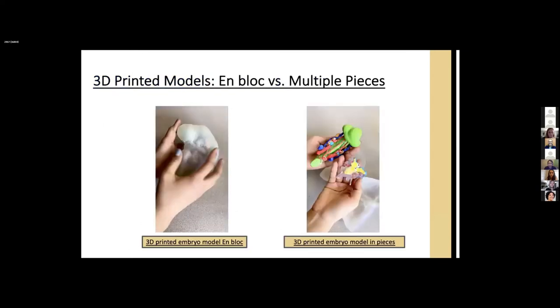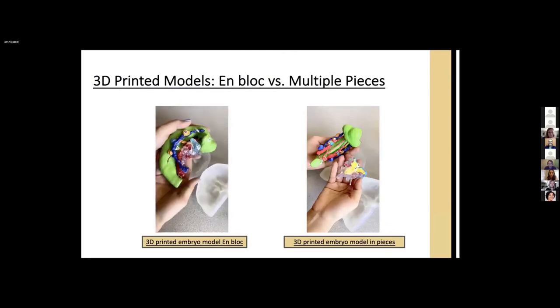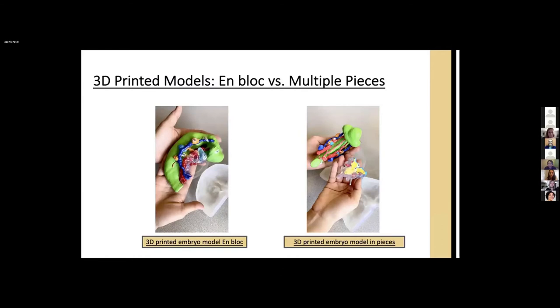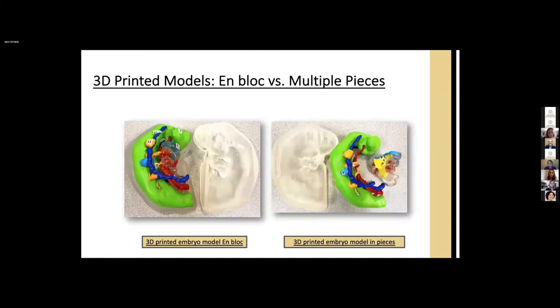So on the left side is the 3D printed embryo models en bloc. So you can see all the internal structures are intact in a solid single piece. On the right side is the modular 3D printed embryo models. So you can see pharyngeal apparatus can be detachable. I know it's not a lot of pieces but it still gives visual access to certain structures. So we obtained histological slides from the Carnegie collection and we segmented and rendered to make these 3D printed models.